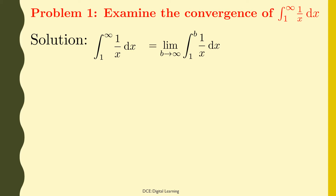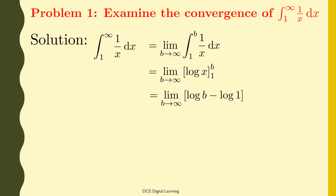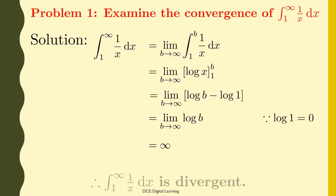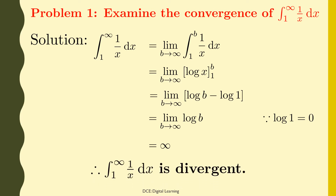On integration, this is equal to the limit of log x from 1 to b as b tends to infinity. Applying the limits, this equals the limit of log b minus log 1, which is the limit of log b as b tends to infinity, since log 1 equals 0. This equals infinity. Therefore, the given integral of 1/x dx from 1 to infinity is divergent.